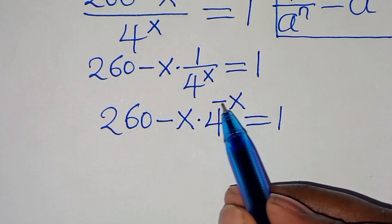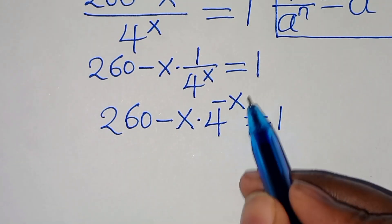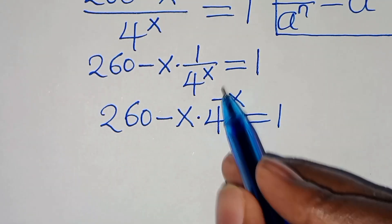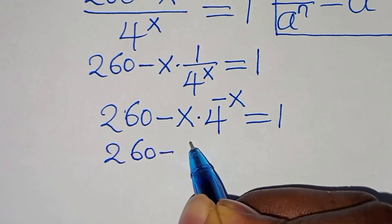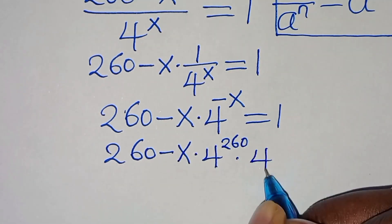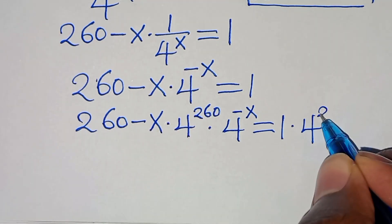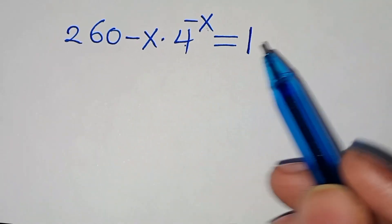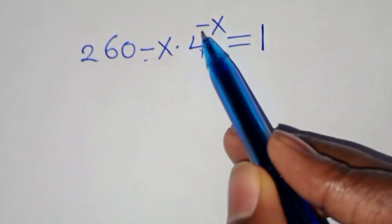The next step: we have 4 to the power of minus x, and the coefficient here is 260 minus x. We want to make the coefficient the same as the power, so we multiply both sides by 4 raised to the power of 260. We have (260 minus x) multiplied by 4 raised to the power of 260, multiplied by 4 to the power of minus x, this is equal to 4 to the power of 260. The coefficient 260 minus x matches the power of minus x here.